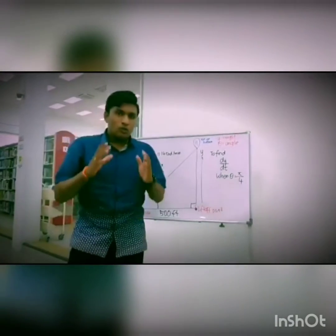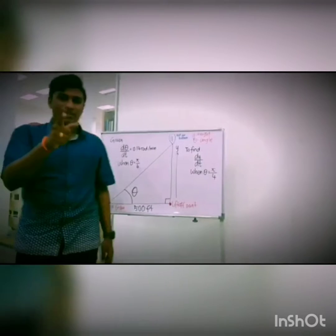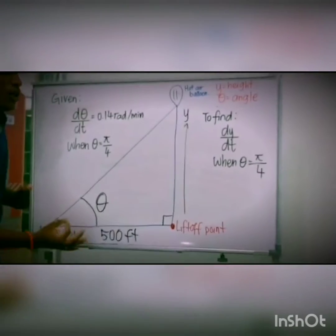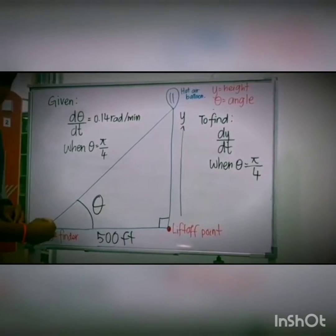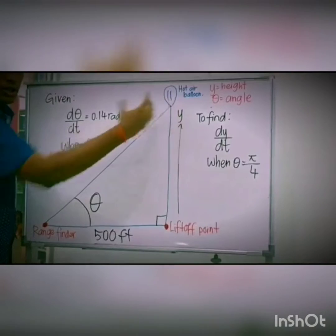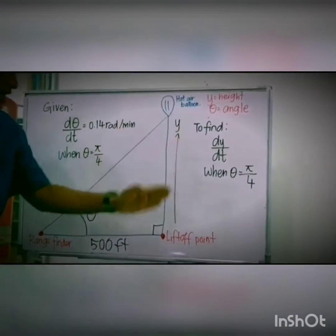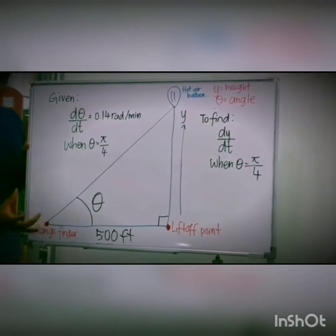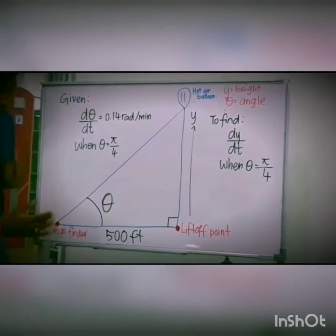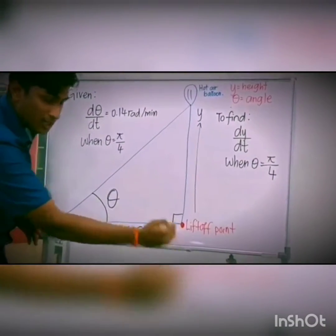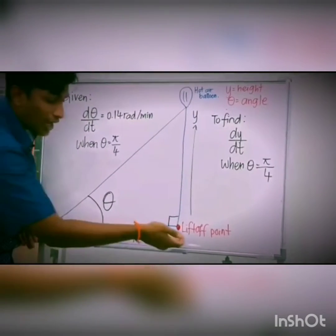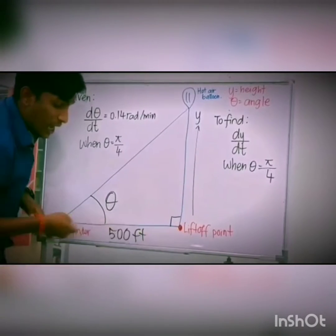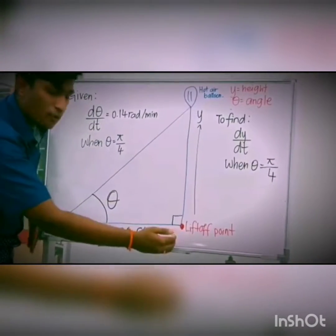Now, let us move on to the question. We will solve this question based on the six strategies. First, we need to place the range finder. The hot air balloon is being launched from the range finder at a certain distance from the lift-off point. Our aim is to find the speed of the hot air balloon from its lift-off point. We set the range finder at this point. The distance from the range finder to the lift-off point is stated to be 500 feet. So, we draw a line and label it as 500 feet. This will be our range finder, this is our lift-off point.